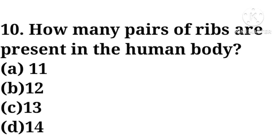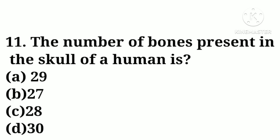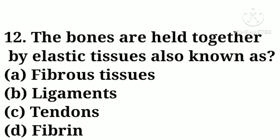Question number ten: how many pairs of ribs are present in the human body — option A: 11, option B: 12, option C: 13, option D: 14. Correct answer: option B, 12. Question number eleven: the number of bones present in the skull of a human is — option A: 29, option B: 27, option C: 28, option D: 30. Correct answer: option A, 29.